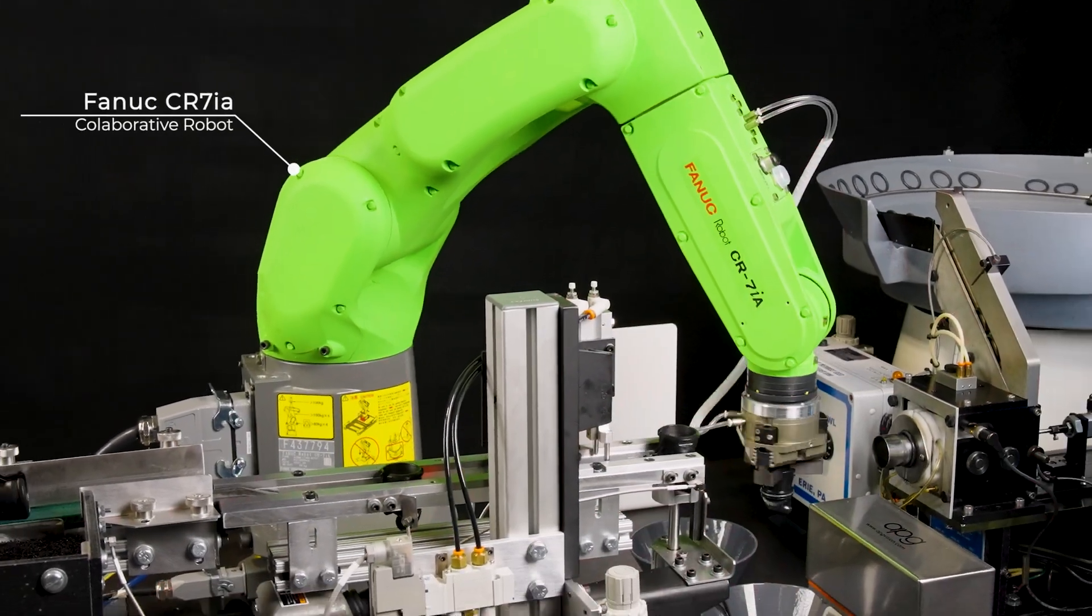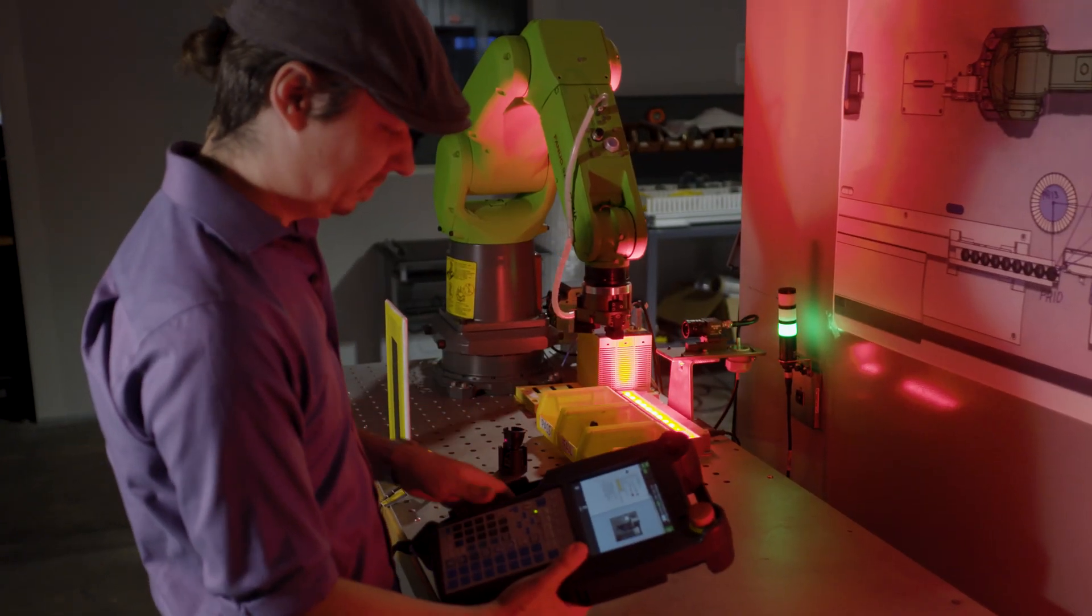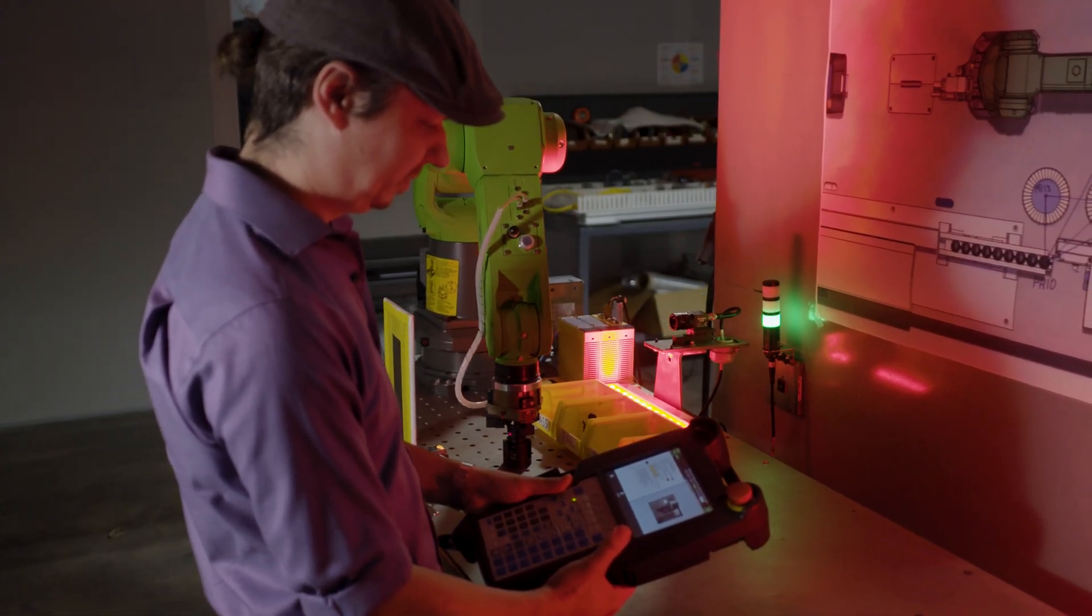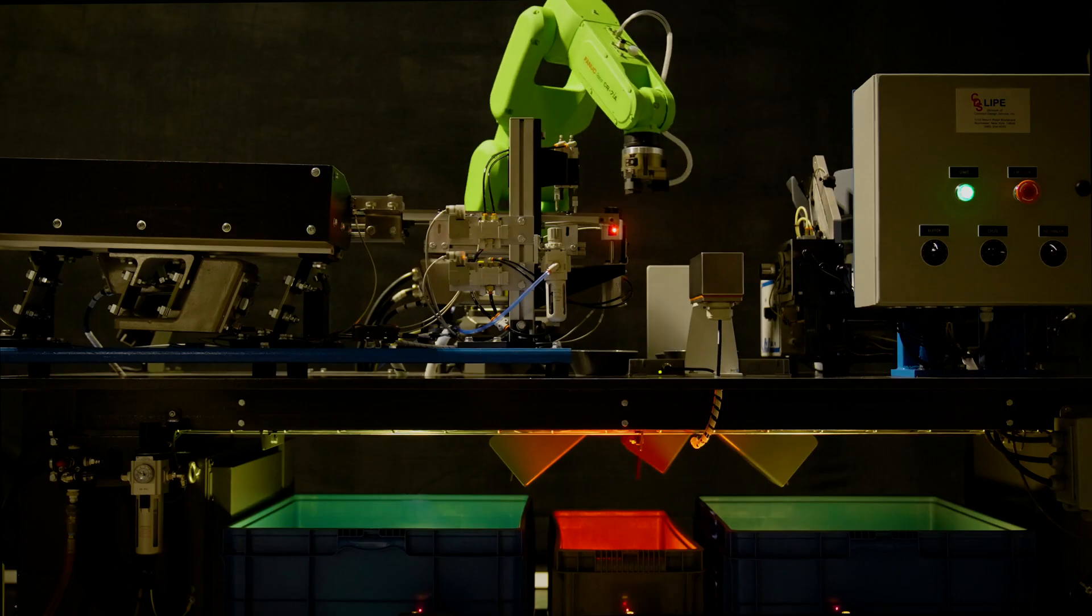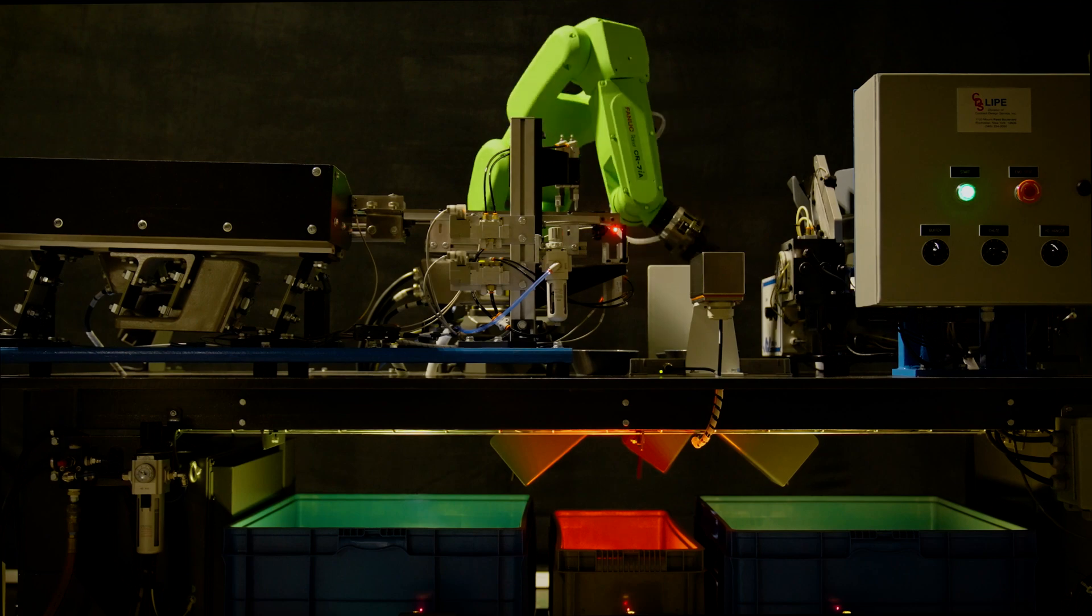In this example, we have incorporated a FANUC CR7IA collaborative robot that has the capability of interfacing directly with humans without the need of extensive guarding and restrictive barriers. The system incorporates a mobile base that allows it to be deployed to multiple machines.